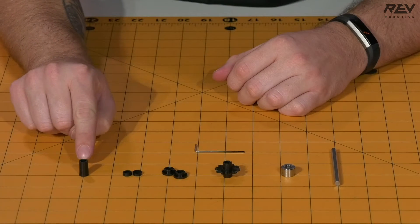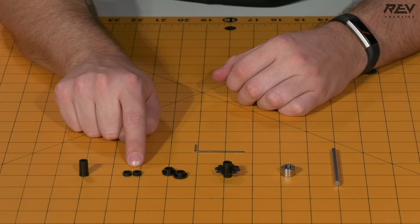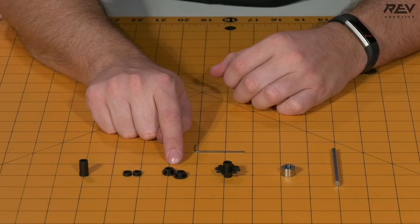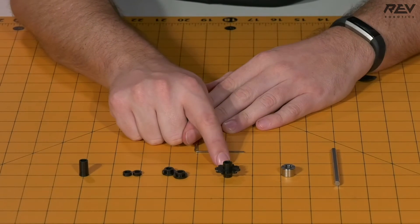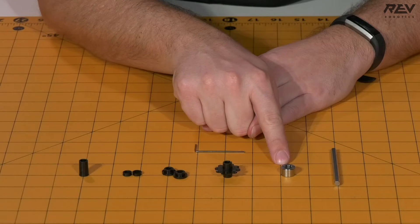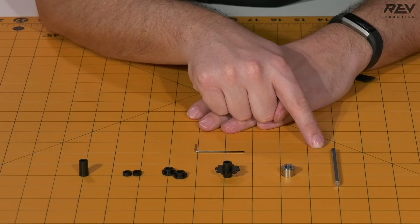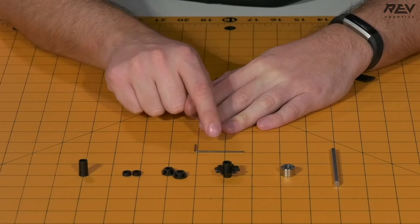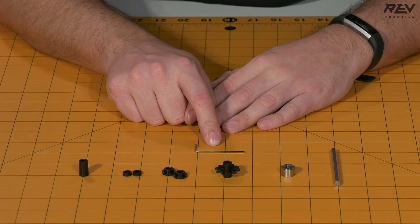For this assembly you will need a 15 millimeter spacer, two 3 millimeter spacers, two short through-bore bearings, a 10 tooth sprocket, shaft collar, a 75 millimeter length of 5 millimeter hex shaft, and a 1.5 millimeter Allen wrench.